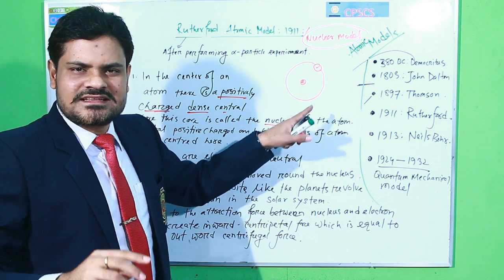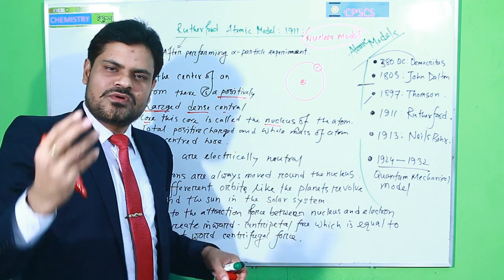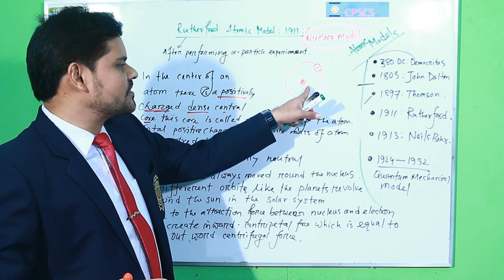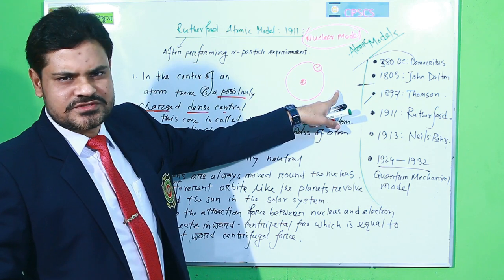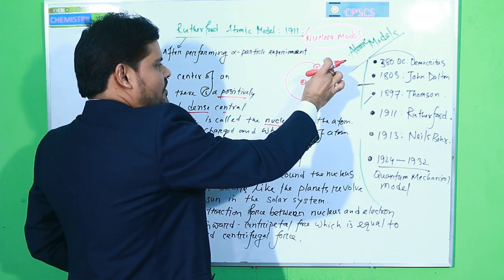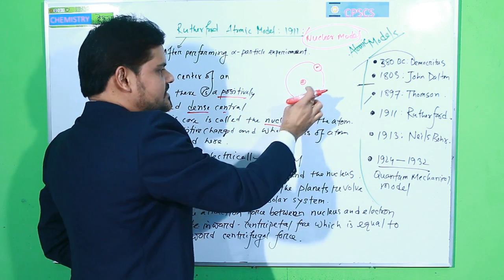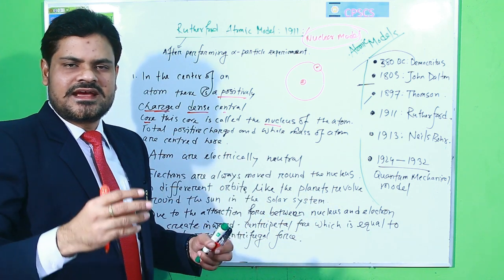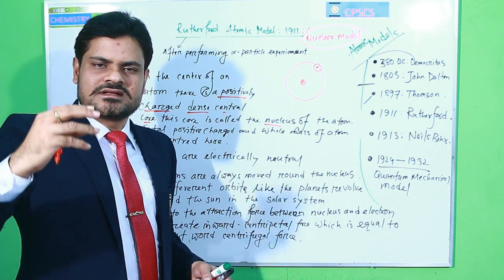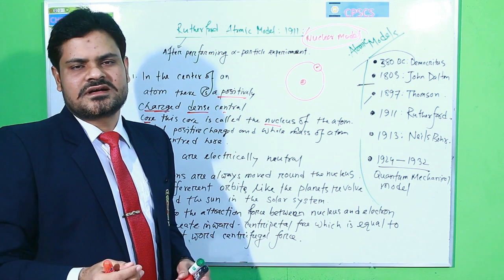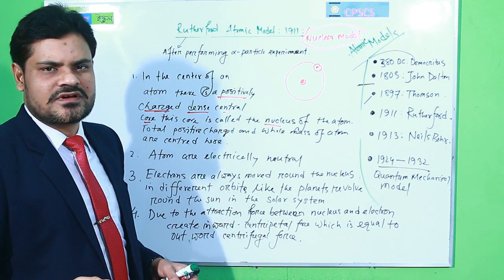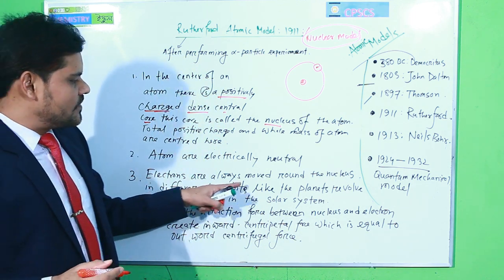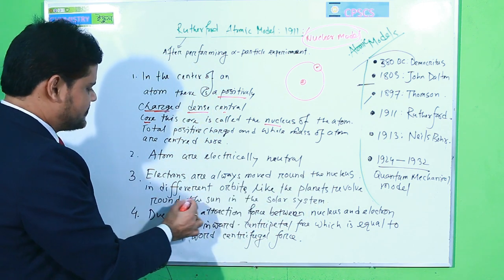Another postulate: atoms are electrically neutral. The nucleus has a positive charge, and an equal amount of negative charge — the electrons — moves around the nucleus in the outer space. The number of electrons equals the number of protons, so they neutralize each other and the atom is a neutral substance.